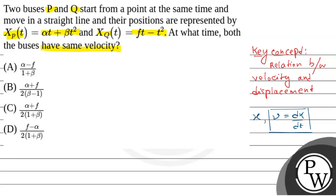Now, displacement of xP is given as αt + βt². So, velocity of P will be dxP/dt, which equals α + 2βt.